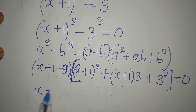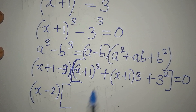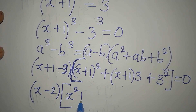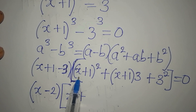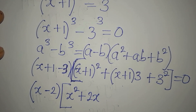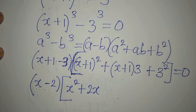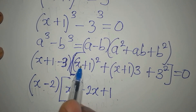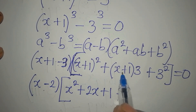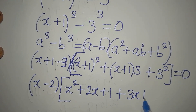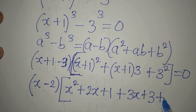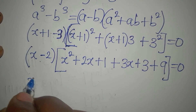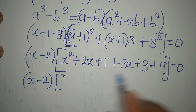Simplifying the first bracket: x + 1 - 3 = x - 2. Now expanding the second bracket: (x + 1)² gives x² + 2x + 1, then plus 3(x + 1) which is 3x + 3, then plus 3² = 9, all equal to 0.